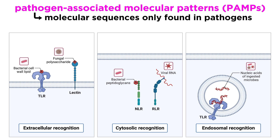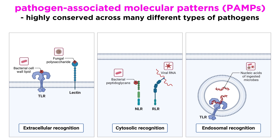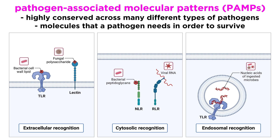PAMPs are specific molecular sequences or patterns that are only found in pathogens. For example, components of bacterial cell walls, or unique forms of nucleic acids that are found in viral genomes, like single-stranded DNA or double-stranded RNA. PAMPs also tend to be highly conserved, meaning that many different pathogens have them, and they tend to be molecules that a pathogen needs in order to survive. This prevents a pathogen from evolving away from innate immune recognition.